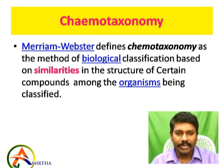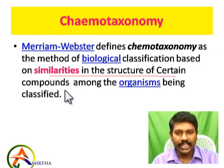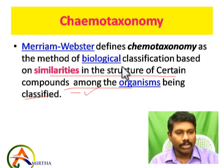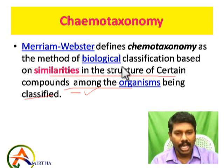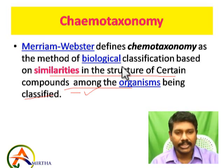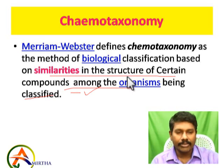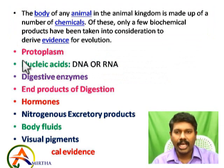Now you must know about hemotaxonomy. Hemotaxonomy was introduced and defined by Merriam Webster as a method of biological classification based on similarities in the structure of certain chemical compounds among the organisms being classified. In organisms — both plants and animals — a lot of chemical substances and secondary metabolites are produced in the body. Plants with similar types of metabolites are termed to be of the same group.